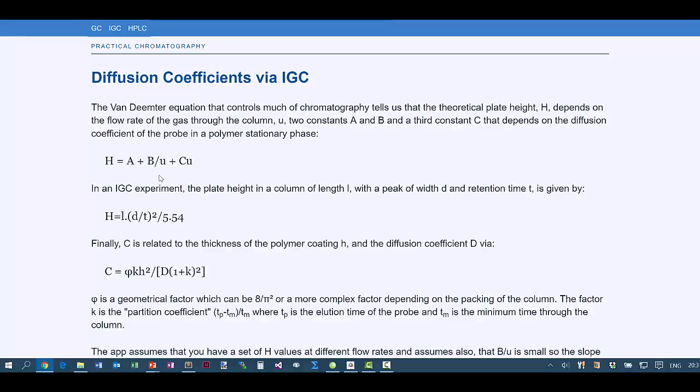Clearly, we need to measure H, the theoretical plate height. And we have a column of length L. And our particular probe molecule, let's say it's toluene, comes out after retention time T and has a peak width of D. And the theoretical plate height is L length times D over T squared divided by this constant.